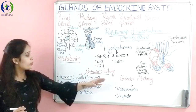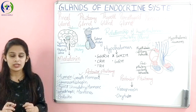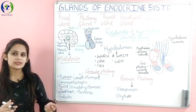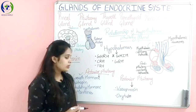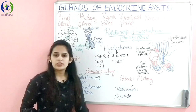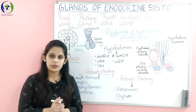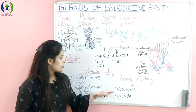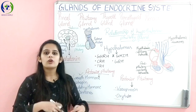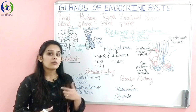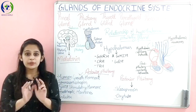Now let's study about the posterior pituitary gland. The posterior pituitary gland does not secrete or synthesize any hormone — it just stores and then releases hormones. The hormones of the posterior pituitary gland are vasopressin, also called antidiuretic hormone, and oxytocin. These two hormones are formed in the hypothalamus and are just stored in the posterior pituitary gland. Vasopressin regulates water balance in our body, and oxytocin can be called the love hormone or bond hormone, also responsible for milk ejection.